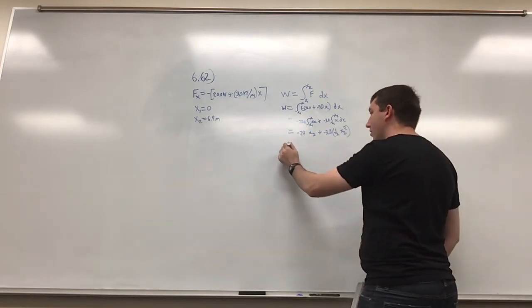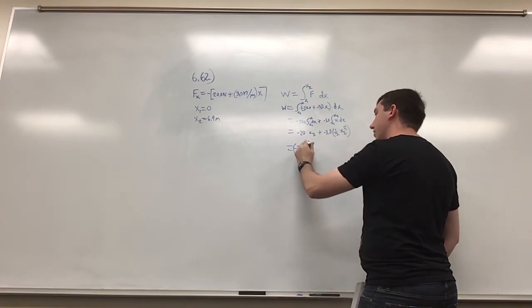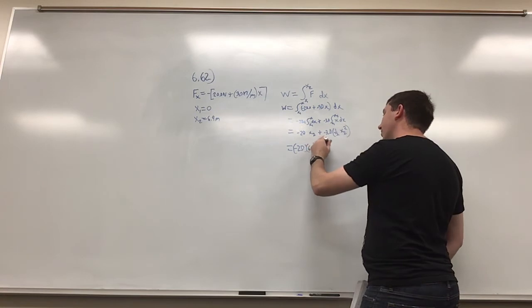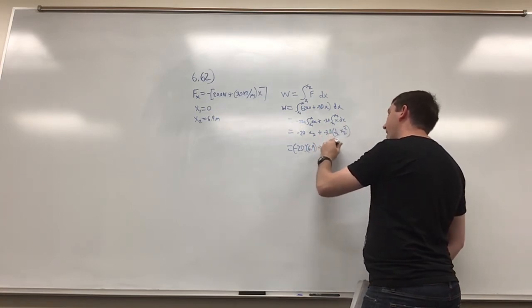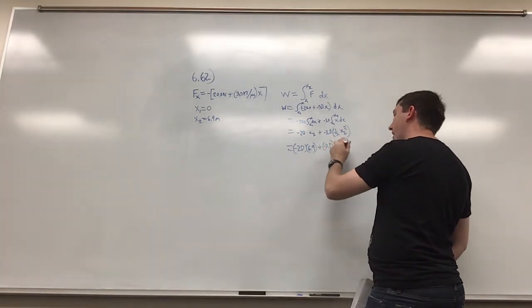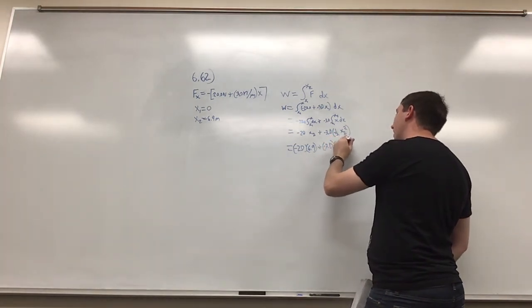Then plug in the values for x2, so negative 20 times 6.9, plus negative 3 times one-half times 6.9 squared.